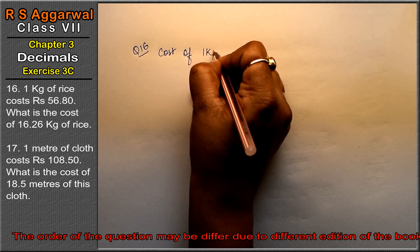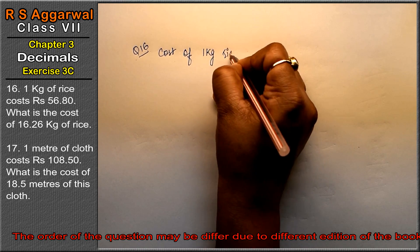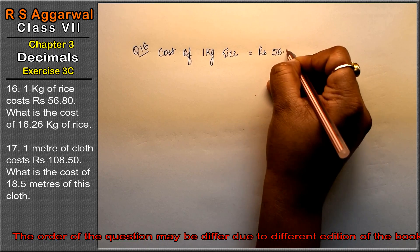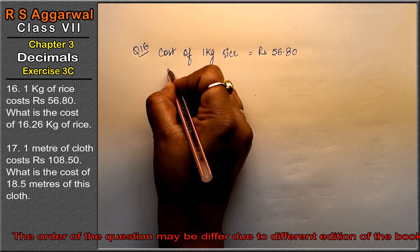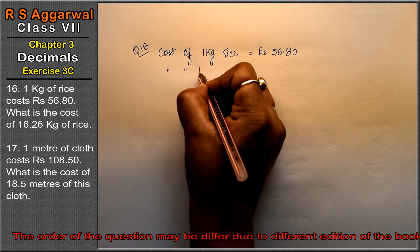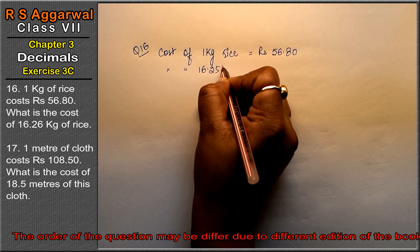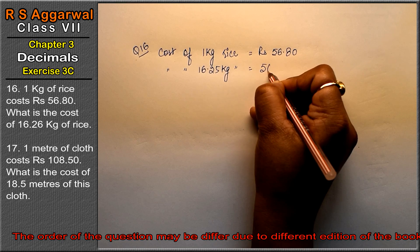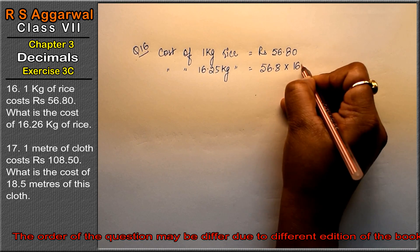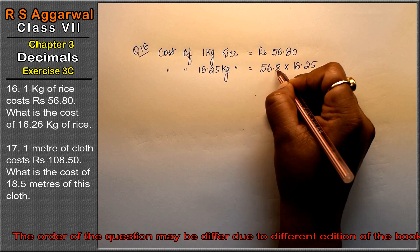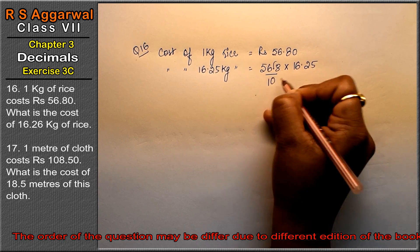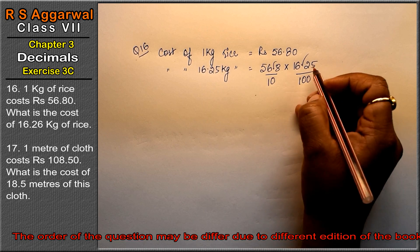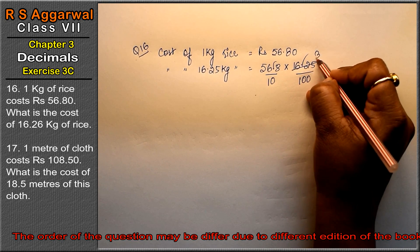Friends, 1 kg of rice is equal to rupees 56.80. Then we have to find the cost of 16.25 kg of rice. So how much is the cost of 1?